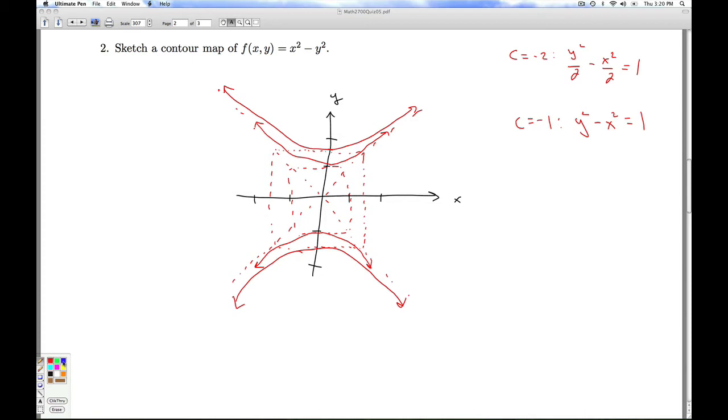Now for the c equals 0, I'm going to make that green. We've actually already got those dotted in. Those are the asymptotes here. Those are supposed to be lines.